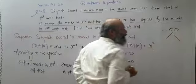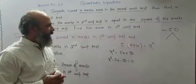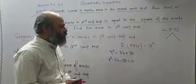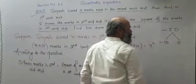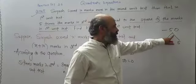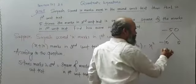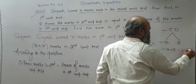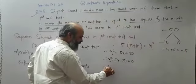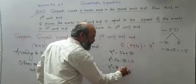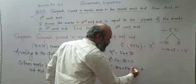Now find the factors. Here minus 50 is there, so take two numbers whose multiplication is minus 50 and whose sum is minus 5. The numbers are minus 10 and plus 5, because minus 10 times 5 is minus 50, and minus 10 plus 5 is minus 5. So we write x squared minus 10x plus 5x minus 50 equals 0.